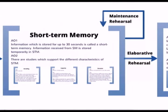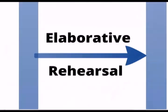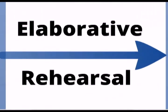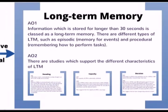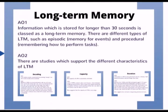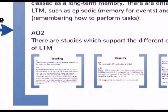A process of maintenance rehearsal is used to keep information topped up in short-term memory. If we rehearse something elaboratively, that information can then pass into our long-term memory store. This is where information is stored for longer than 30 seconds, and there are thought to be different types of long-term memory, such as memory for events or memory for performing tasks. There are also studies which support the different characteristics of long-term memory.